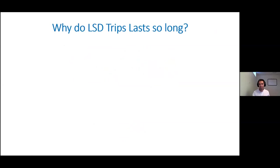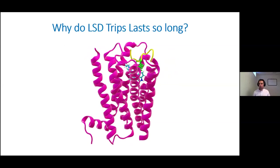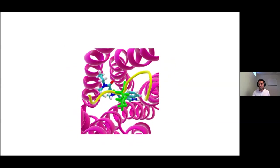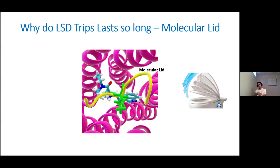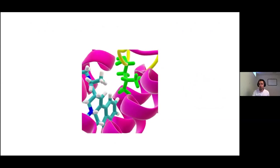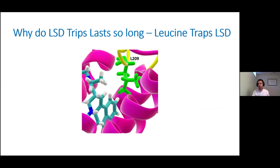Finally, why do LSD trips last so long? From the Nichols paper on the crystal structure of the serotonin receptor, what they found is something called a molecular lid. What happens is when LSD takes its key, puts it inside the receptor or keyhole, it turns the diethylamide, and then this lid shuts down on the drug. It's a molecular lid that closes after all the binding occurs. There's a specific amino acid residue called leucine at the 209th position that wedges LSD down into the receptor, forcing it to stay inside and making it really hard for LSD to escape.